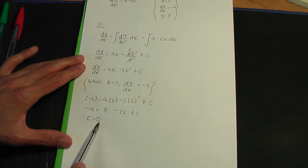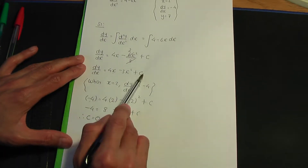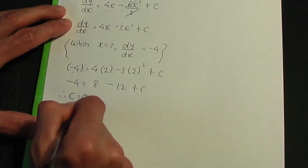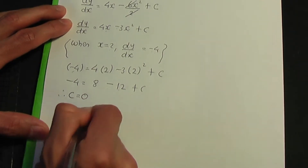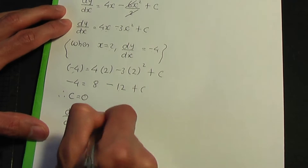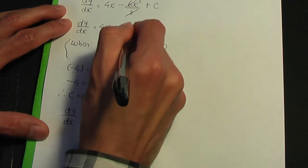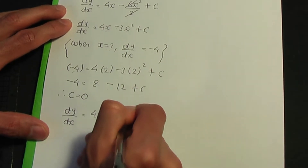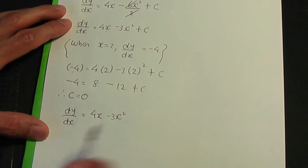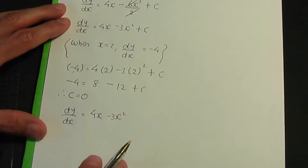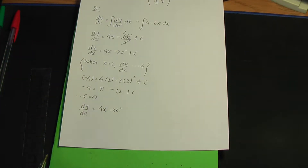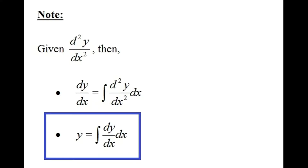Replacing c with 0 in the equation gives us dy/dx equal to 4x minus 3x². Now, to work out y, we need to integrate dy/dx with respect to x.